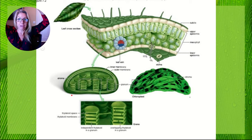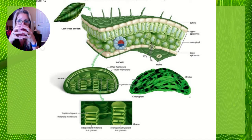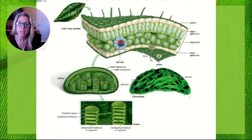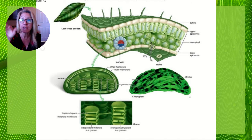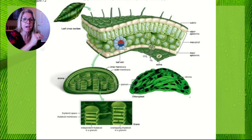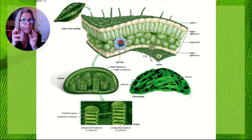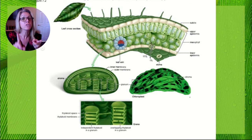Evidence for that origin is that chloroplasts have their own DNA — a single circular chromosome like what you'd find in bacteria — and they are self-replicating with their own ribosomes doing their own protein synthesis. Now let's take a closer look inside a chloroplast. We can see the double membrane and these green pancakes stacked up — hollow green pancakes. Remember in chapter six when I talked about electron transport chains?